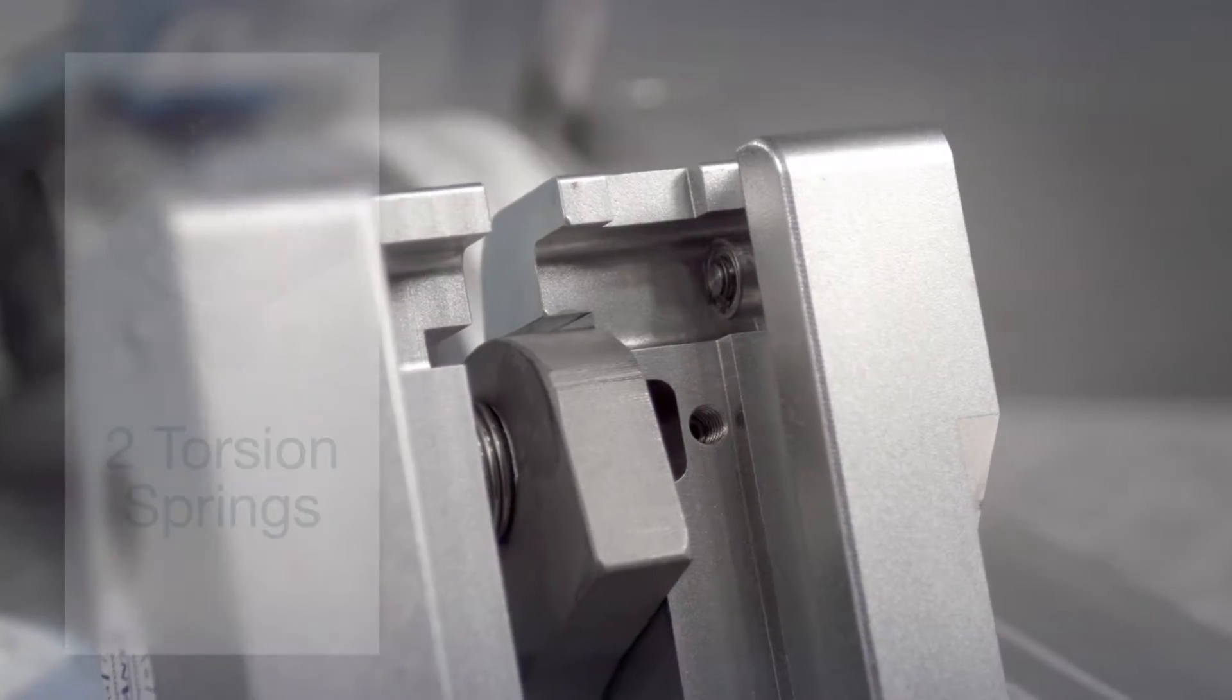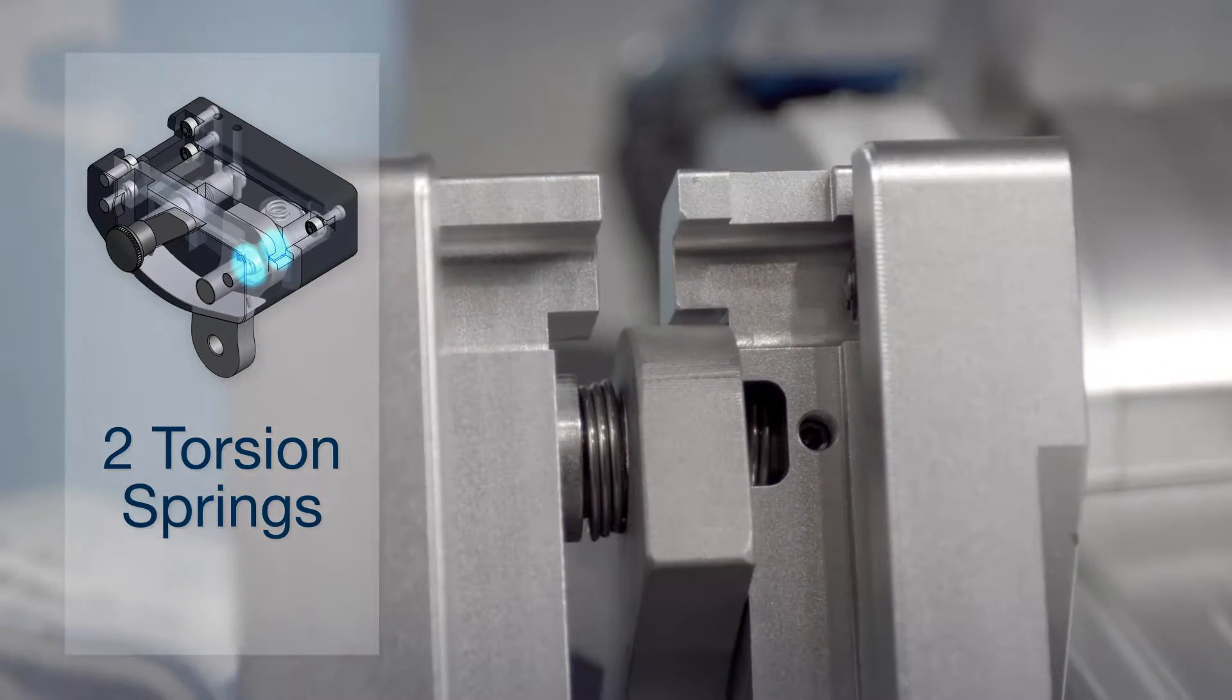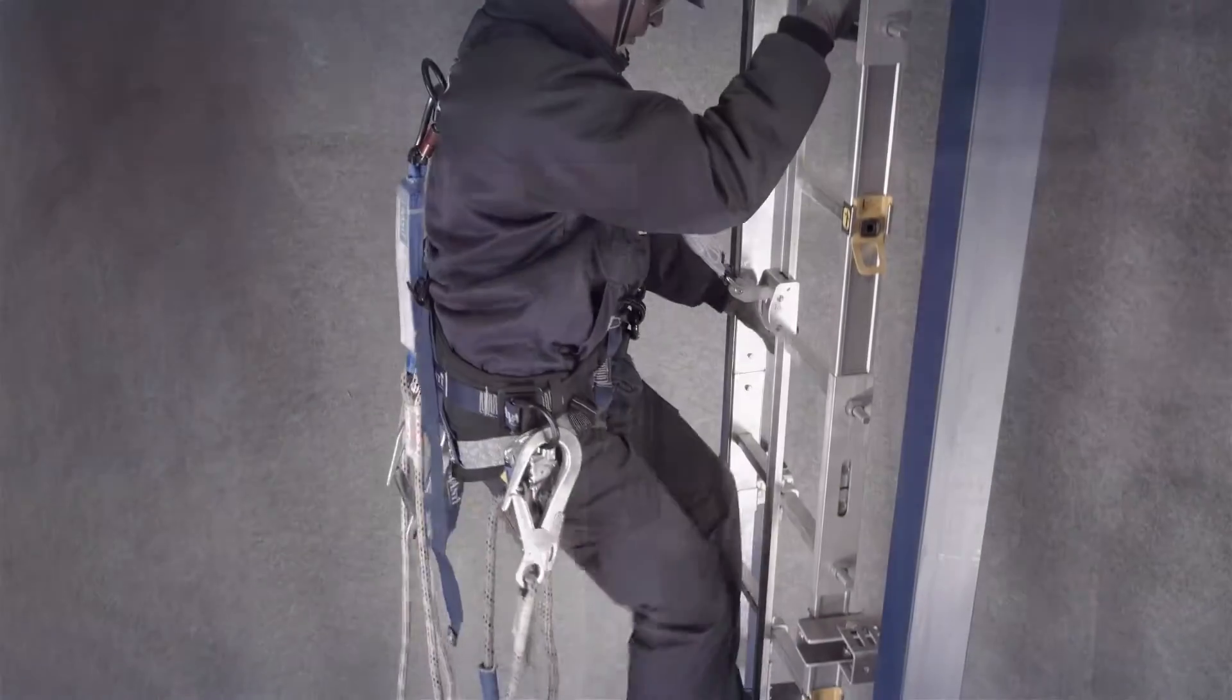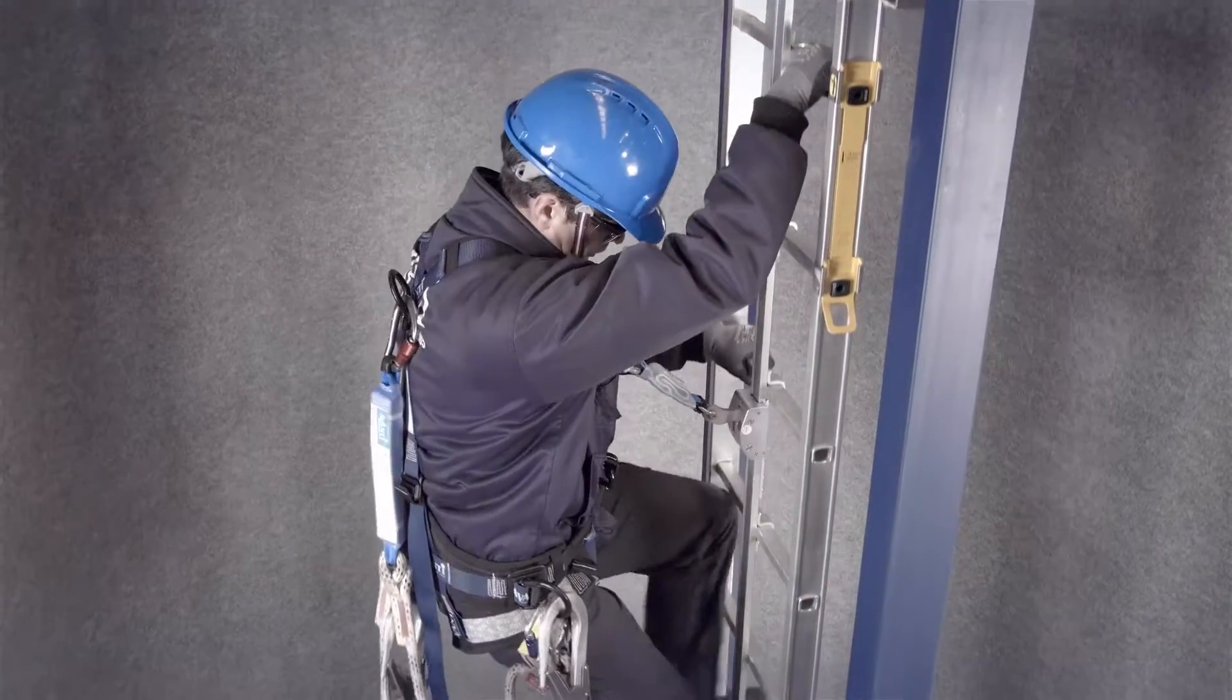The two torsion springs are protected by the main runner body, serving as a safety backup. In the unlikely situation that one of the springs is damaged or lost, the user can still descend or ascend safely.